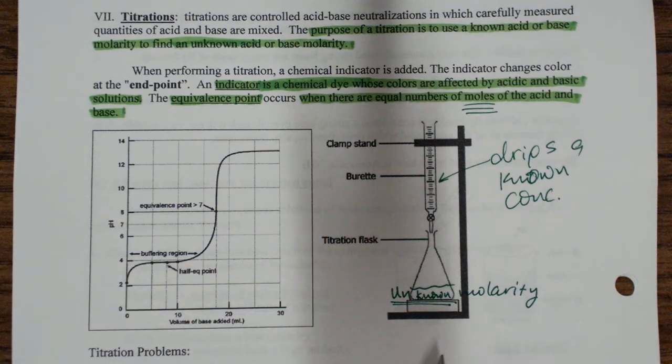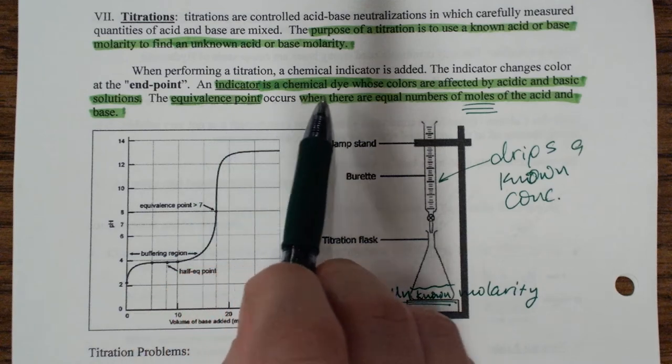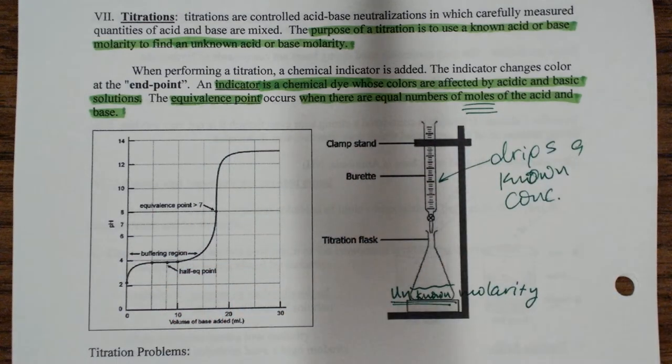Our unknown would have an indicator added to it, and an indicator is just a chemical dye whose colors are affected by acid or basic solutions.